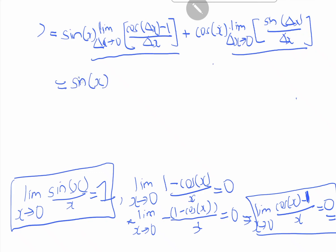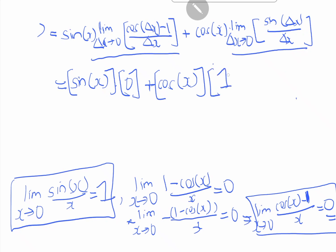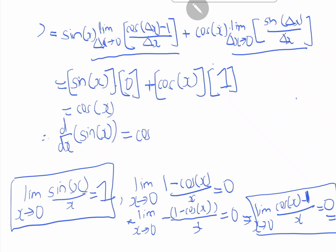Applying these results: sin x times 0 plus cos x times 1, therefore this equals cos x. Hence d over dx of sin x equals cos x, which we have proved using the definition of derivatives. We've come to the end of this lesson — if you have any questions please drop a comment and I'll reply. Thanks so much for watching and have a nice day!